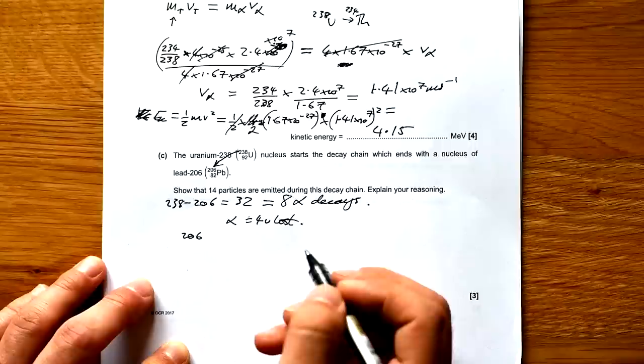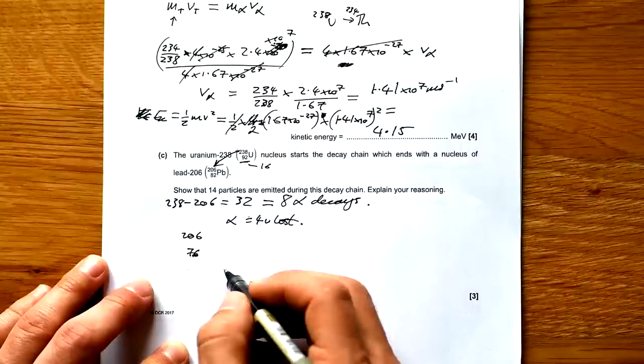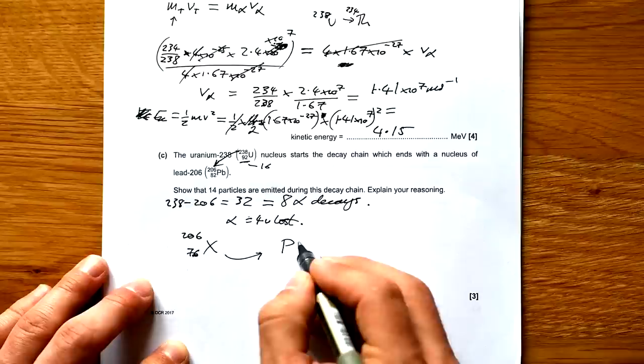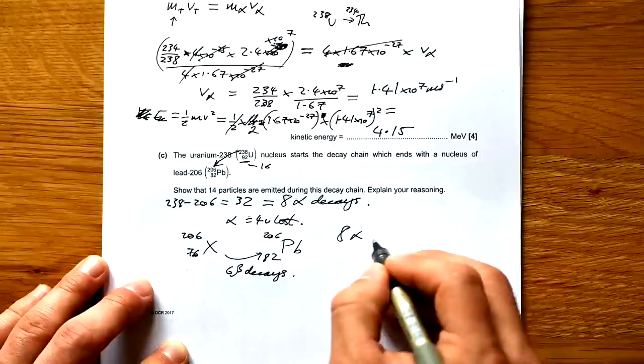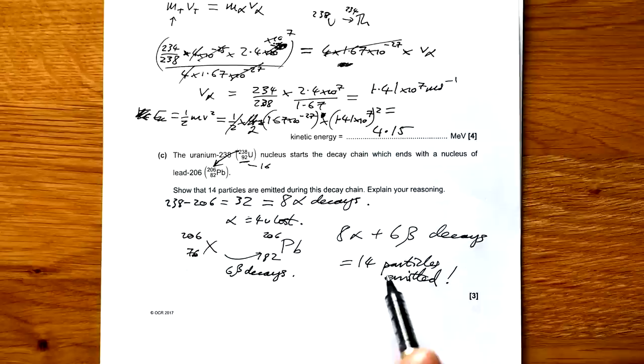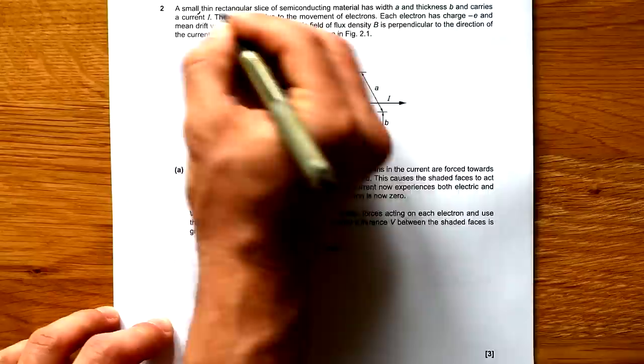But if it's 8 alpha decays, that gets us to 206, yes. But it also takes away 16 from here as well, because we're taking away two protons every time. So take away 16. That leaves us with 76. And I don't know what that is, but it doesn't matter. We're looking for that. And then we have to get back up to lead, 206 mass doesn't change. But 82. That means that we have one, two, three, four, five, six beta decays. Therefore, eight alpha plus six beta decays equals 14 particles emitted.